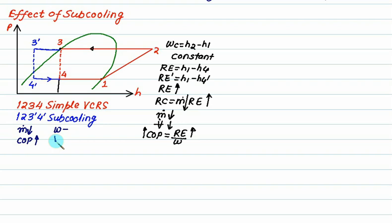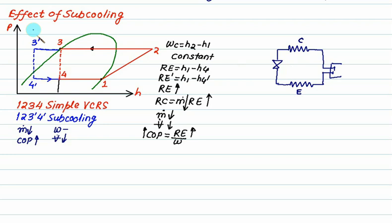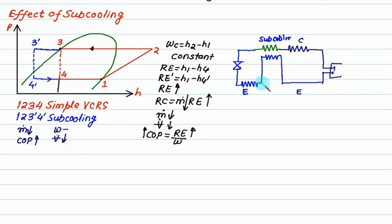In the simple VCRS, we have an evaporator, condenser, expansion valve, and compressor. To achieve sub-cooling, you add a sub-cooler after the condenser. At the end of the evaporator, we always desire a saturated state. The high-temperature stream passes through the sub-cooler alongside the cold-temperature stream, which lowers the high-temperature stream. This guarantees that the vapor exiting is superheated.